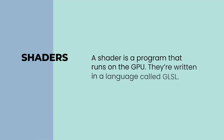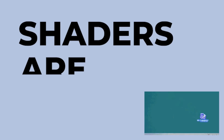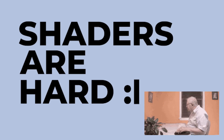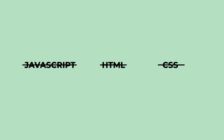Simply put, a shader is a program that runs on the GPU. They're written in a language called OpenGL Shading Language, or GLSL, and it's very similar to the C language. This is why shaders, at least in respect to websites, are considered the most difficult tech for front-end developers to tackle — it's not written in JavaScript, HTML, or CSS.